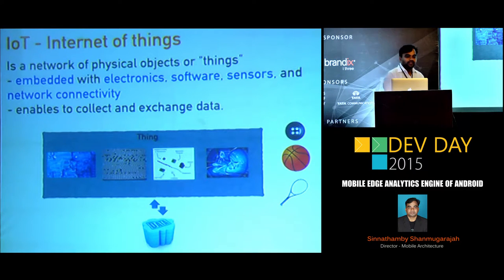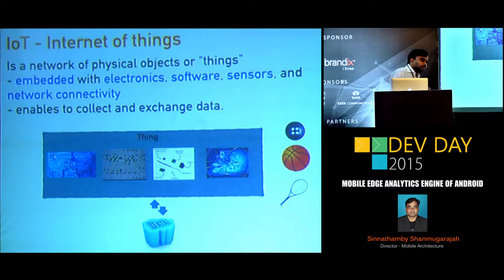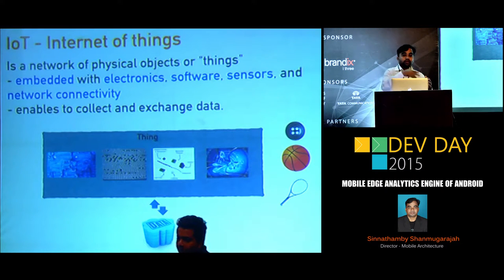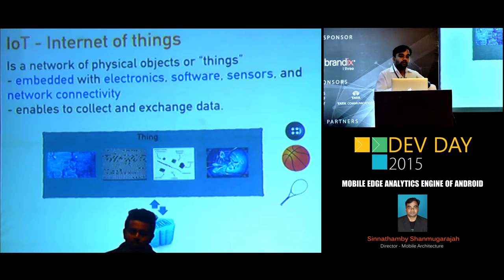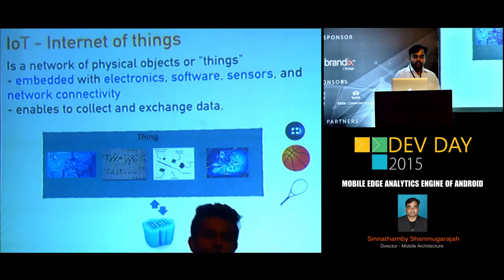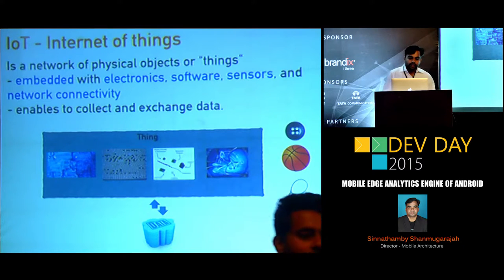There's also a tennis ball with sensors. You hit the ball and the coach, looking at the phone, can say 'this is wrong, you have to improve your shots.'